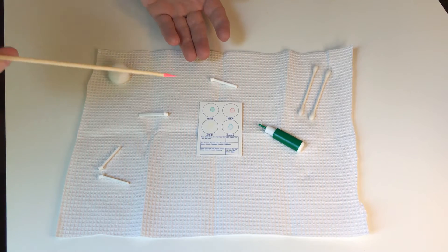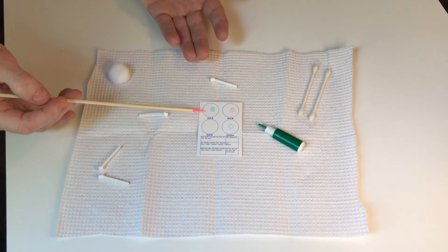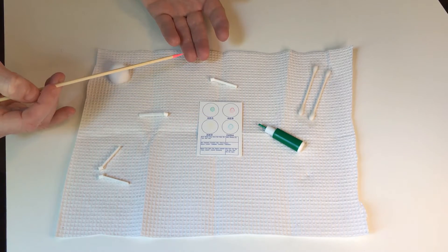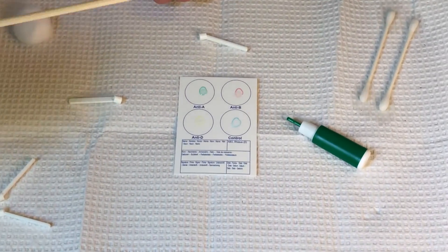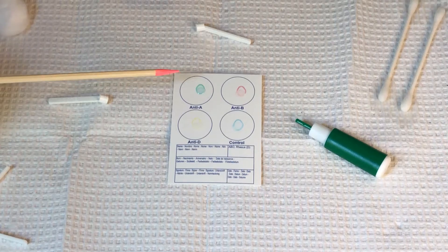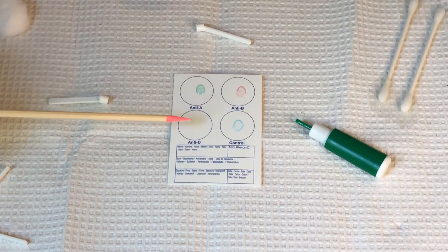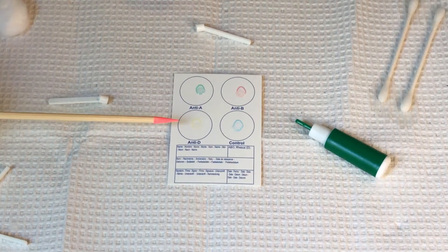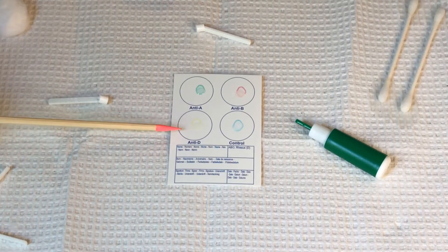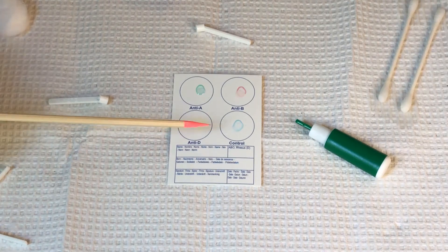This one says anti-A, which means it'll test for the A antigen. If I have A type blood, this one will show a reaction. This one says B. That one says D. D is actually the Rh group, so this tests whether I'm Rh positive or Rh negative. This one's a control. It shouldn't react at all.